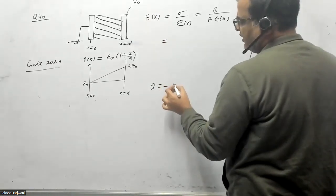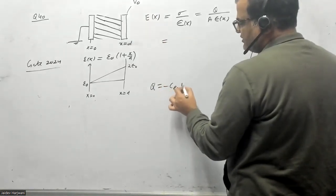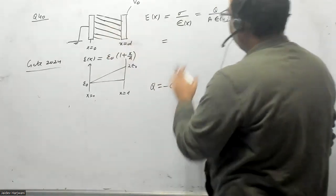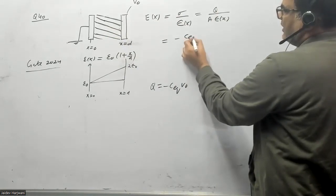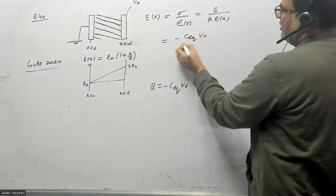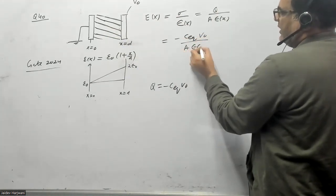I can find C equivalent of this assembly, so I can put it here and find E(X). This will become my C equivalent times V naught divided by A times X.